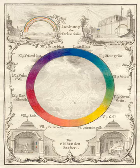Color theory was originally formulated in terms of three 'primary' or 'primitive' colors — red, yellow and blue — because these colors were believed capable of mixing all other colors. This color mixing behavior had long been known to printers, dyers and painters, but these trades preferred pure pigments to primary color mixtures, because the mixtures were too dull.